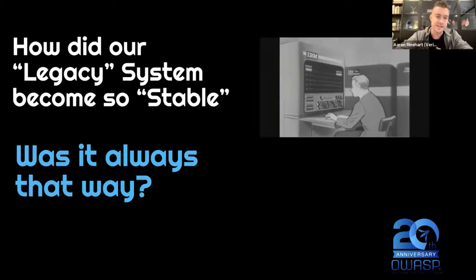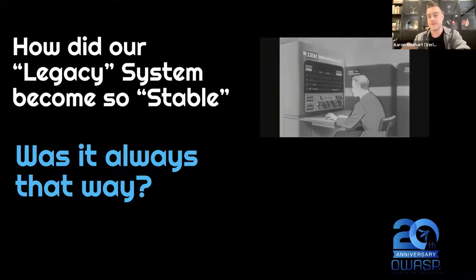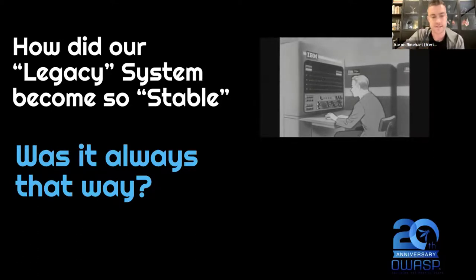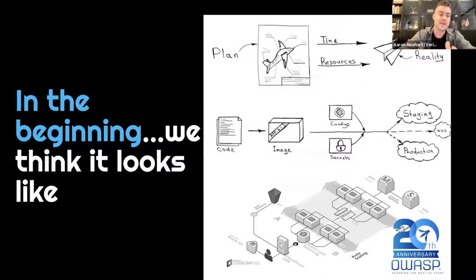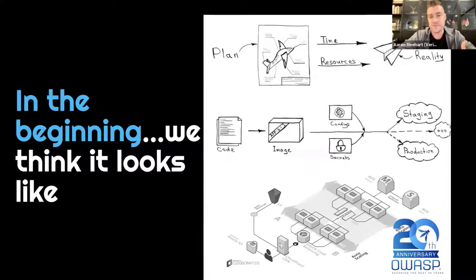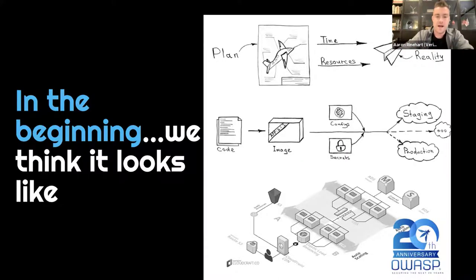The same thing applies to security. We often build detection and prevention controls under a certain context and understanding, but the system often changes a lot before those controls actually come into use. What we're trying to do is proactively ensure the system still does what it's supposed to, instead of learning we didn't understand the system through an outage or security incident. System engineering is a messy exercise — in the beginning, we'd love to think the system is very simple. We've got a plan, our Docker images, our secrets taken care of, different environments, a beautiful AWS diagram.